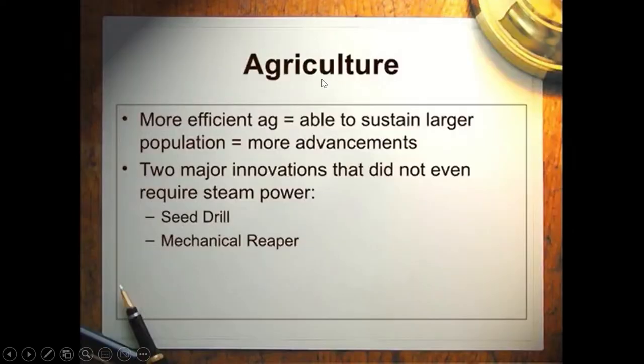One of the big dilemmas during the Industrial Revolution is: what's the most profitable way to implement these technologies? Do you turn your attention to the factory and finished goods products and use all your innovation there? Or do you turn your attention to the agricultural side, producing raw materials and food? We'll see that there was heavy innovation in both.